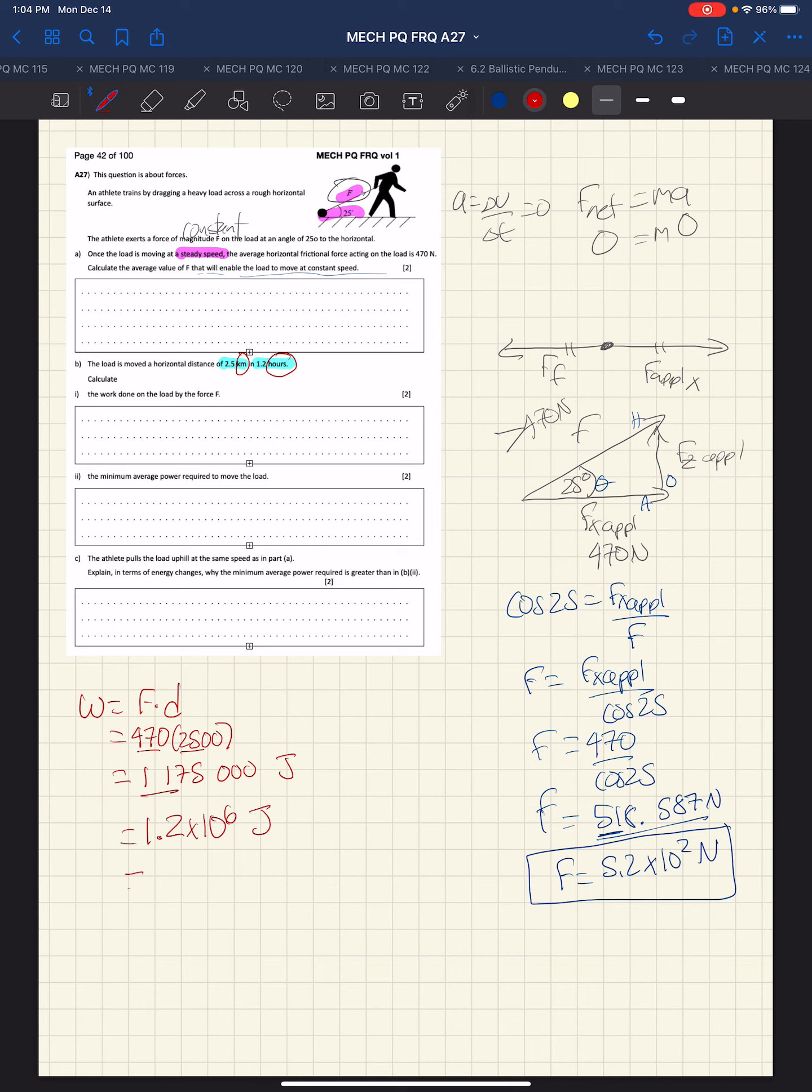Those are the two units we could use to express our answer for part B(i). For the minimum power to move the load, power is work divided by time. We have 1,175,000 joules on top, and the time is 1.2 hours. 1.2 hours times 60 minutes per hour times 60 seconds per minute—minutes cancel, hours cancel—we're left with just seconds. That's 1.2 times 60 times 60, and the power then turns out to be 271.99 watts.